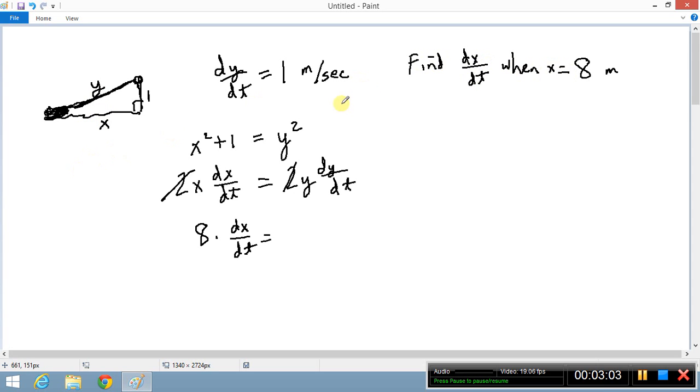We have a triangle that looks like this, and this is 1 and this is 8, and so this is y and we can figure y squared equals 8 squared plus 1 squared. So that's going to be y equals square root of 65.